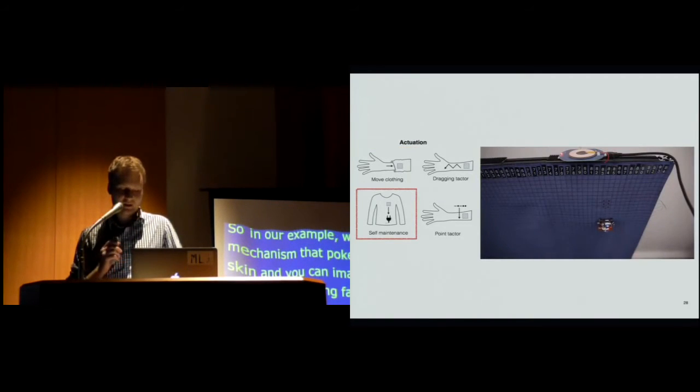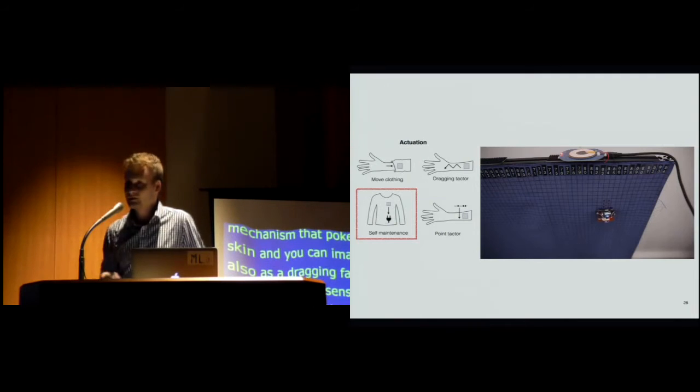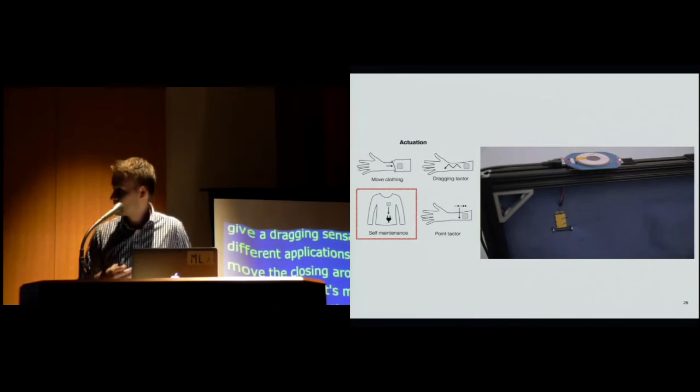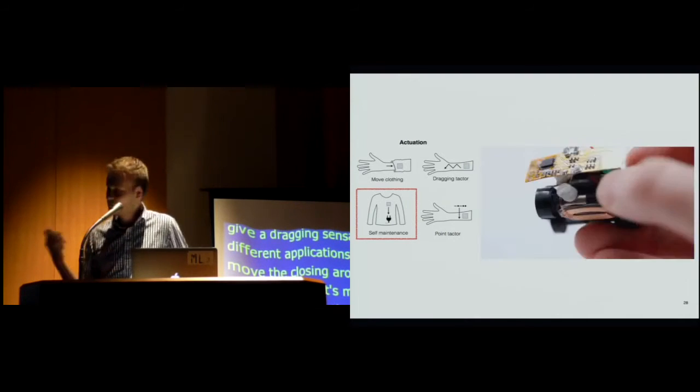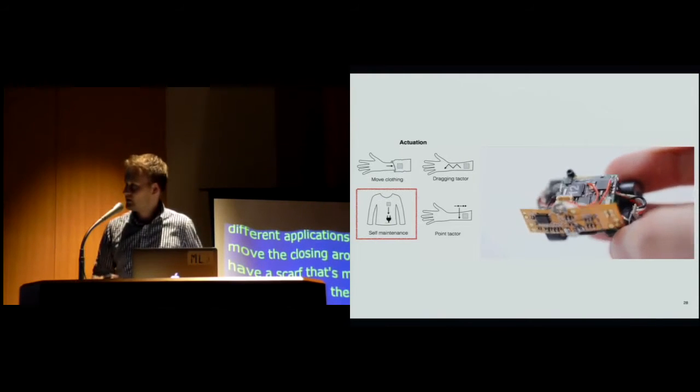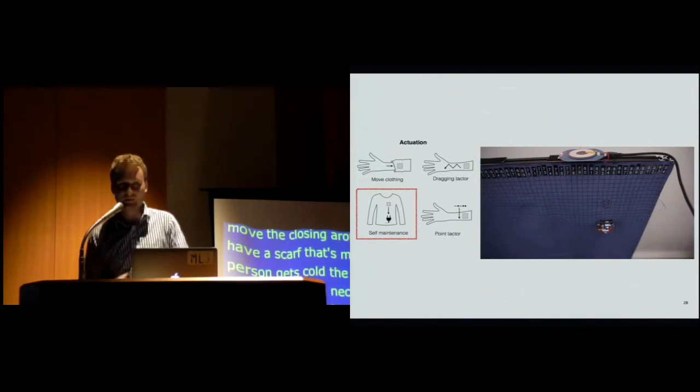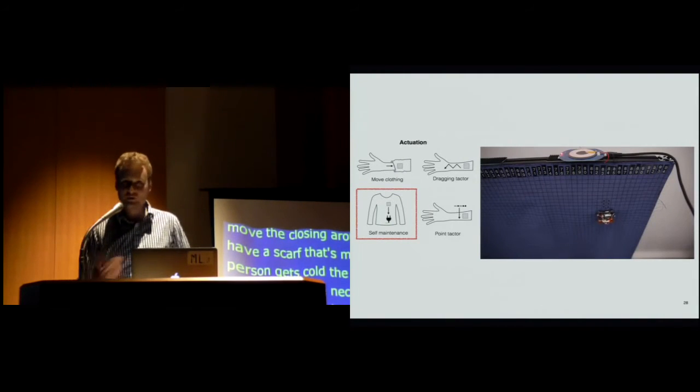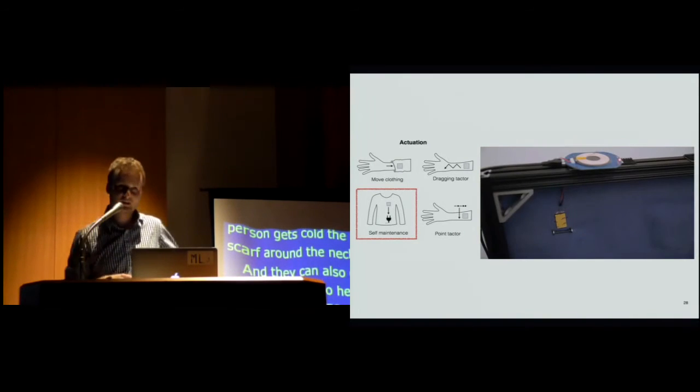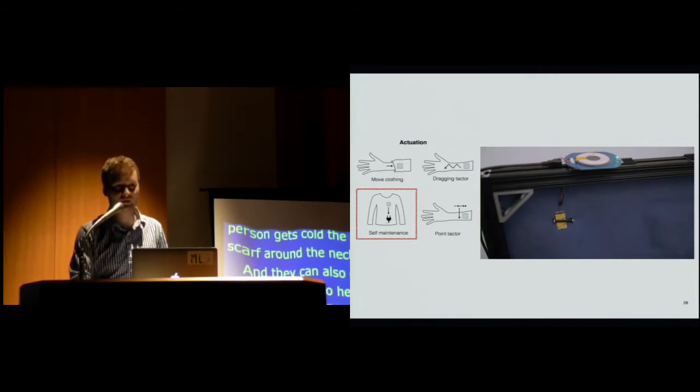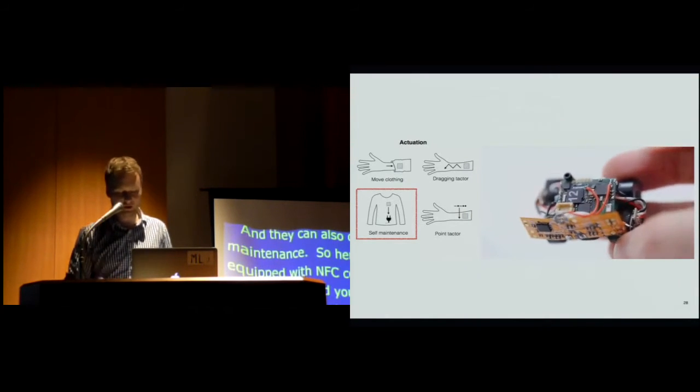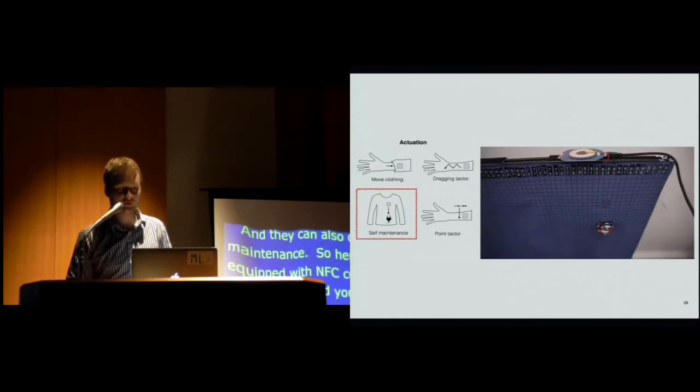And they can also do self-maintenance. So here the robot is equipped with a NFC coil, wireless charging coil. And it can charge itself. It can sense where the coil is. So you can imagine maybe in the future the robot can have a, if you're wearing a cell phone in your pocket, you can just find where the cell phone is and feed off the NFC from the cell phone. So you can work without charging kind of on its own.